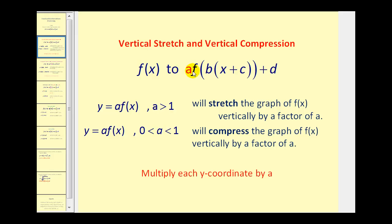Let's first talk about the value of a. y equals a times f of x for a greater than 1 will stretch the graph of f of x vertically by a factor of a. And y equals a times f of x for a between 0 and 1 will compress the graph of f of x vertically by a factor of a. One way to find coordinates of a transformed function in this form would be to find points on the parent function, keep the x-coordinates the same, but multiply the y-coordinates by a to find the y-coordinates of the transformed function.